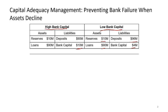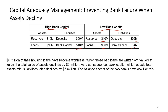Now suppose $5 million of housing loans become worthless. When these bad loans are revalued at zero, total assets decline by $5 million — similar to what happened in the 2008 financial crisis when people failed to pay back mortgages. As a consequence, bank capital — which equals total assets minus liabilities — also declines by $5 million.